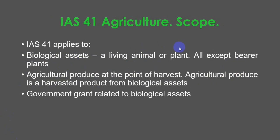Scope of IAS 41. IAS 41 applies to biological assets — a living animal or plant, all except bearer plants — agricultural produce at the point of harvest. Agricultural produce is a harvested product from biological assets. It also covers government grants related to biological assets.